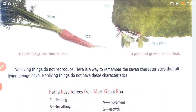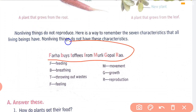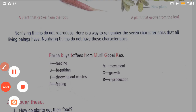Here is an easy way to remember the characteristics of a living thing: the sentence 'Farha Buys Toffee From Moldi Gopal Raw.' F for Feeling, B for Breathing, T for Throwing out waste, F for Feeding, M for Movement, G for Growth, R for Reproduction. If you remember this sentence, you can remember all seven characteristics of a living thing. This completes Chapter 1. Hope you have understood. Thank you, have a nice day!